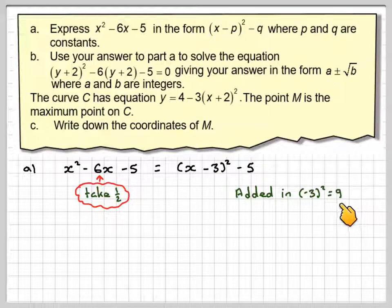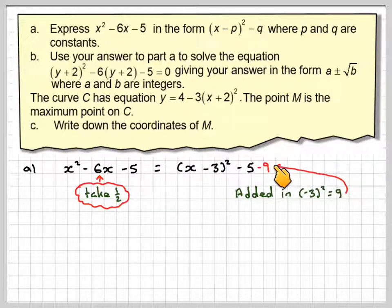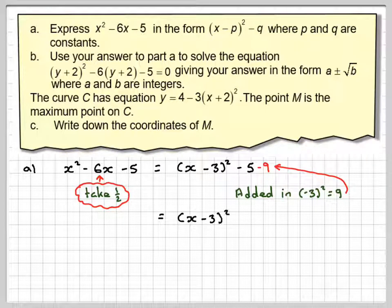So if we've added in 9 to this, then here we now compensate by taking away 9. Otherwise we change the expression. This is why it's called completing the square. So this is going to be equal to (x - 3)² - 5 - 9, which is -14.